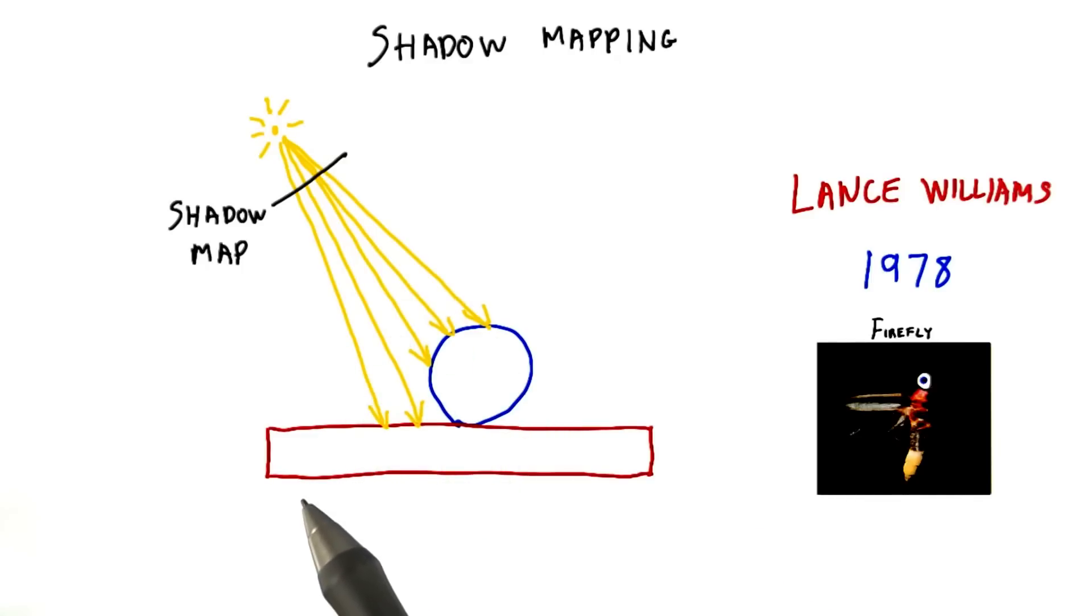In Three.js, the only lights capable of casting shadows are spotlights and directional lights. For directional lights, you specify the limits of how wide the light extends.